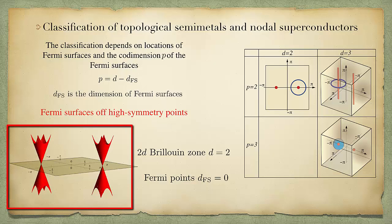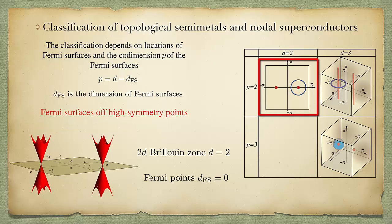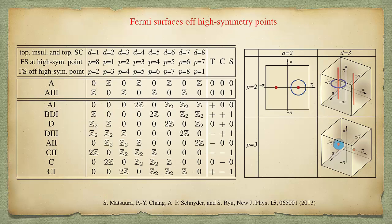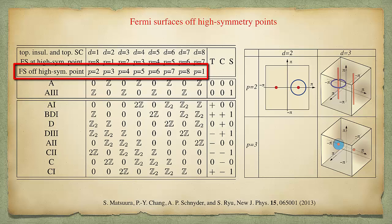This figure shows a Fermi point located at high symmetry points. The Fermi surface dimension is zero and the spatial dimension is two, so the codimension is two, as also shown in this figure. In another example, we can have spatial dimension 3 and codimension 2, giving Fermi dimension 1, so we have a Fermi line. The topology of Fermi surfaces at high symmetry points is classified by different codimension p, as shown in the third column.